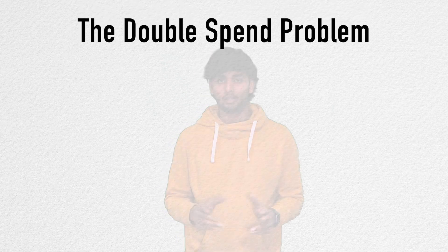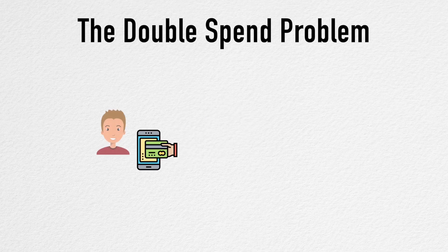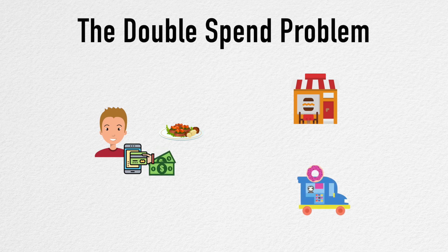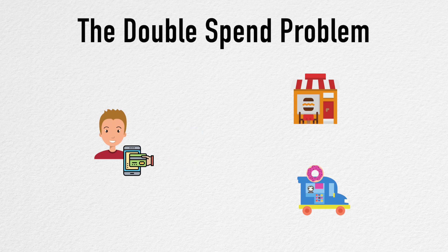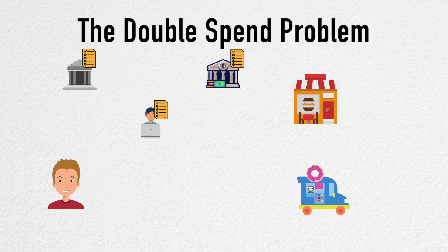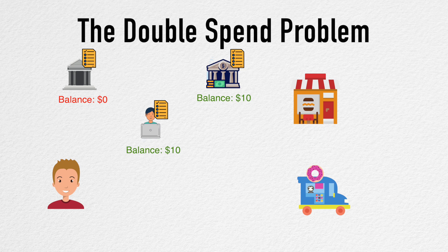Before discussing the structure of a blockchain, there is one very important issue you should know — it's called the double spend problem. This is a problem unique to digital payments. Say you have $10 in your account and you spend it online. If you manage to do another transaction using the same $10, you would have essentially spent it twice — hence the name, double spend. In a centralized ledger, this is easy to prevent: as soon as you spend the $10, it is deducted from your balance and any further attempts to spend it again will simply fail. In a naive distributed ledger, you may attempt to spend it again by dealing with a different entity who is not aware of your earlier transaction. Any sound financial system must prevent double spending, and as you will see, blockchain aims to prevent this by design.